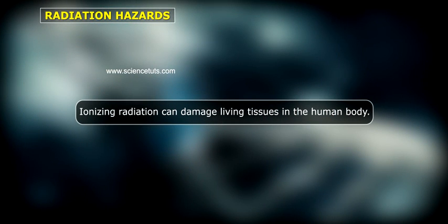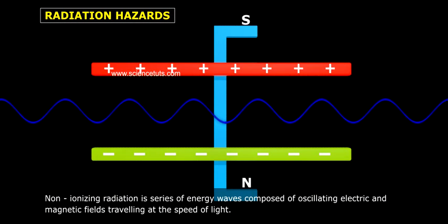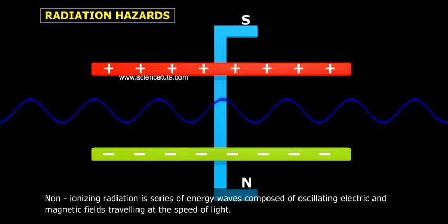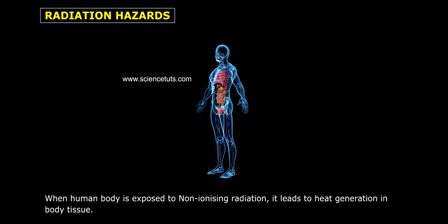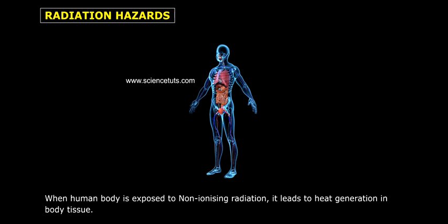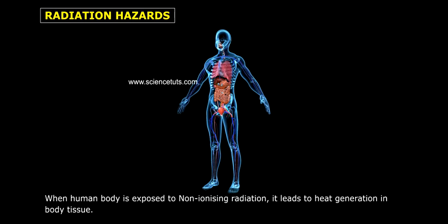Ionizing radiation can damage living tissues in the human body. Non-ionizing radiation is a series of energy waves composed of oscillating electric and magnetic fields traveling at the speed of light. When the human body is exposed to non-ionizing radiation, it leads to heat generation in body tissue.